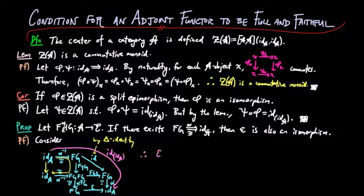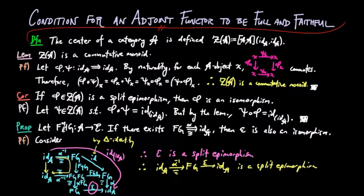And thus, epsilon alpha inverse is a split epimorphism, since alpha is an isomorphism. And therefore, epsilon is a split monomorphism as well, since epsilon alpha inverse is in the center of A and by the corollary above.